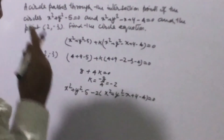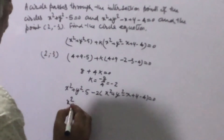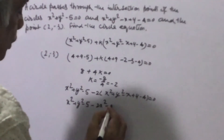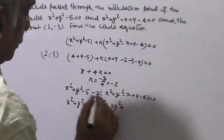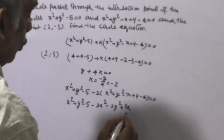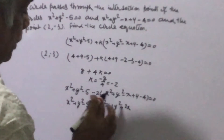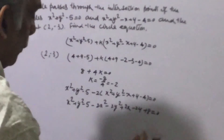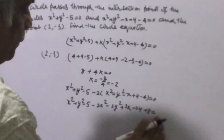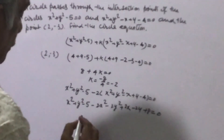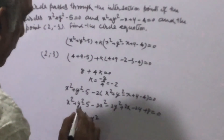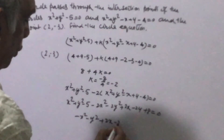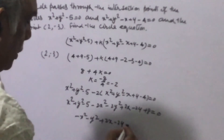Simplifying: x² + y² - 5 - 2x² - 2y² + 2x - 2y + 8 = 0, which gives us -x² - y² + 2x - 2y + 3 = 0, or equivalently x² + y² - 2x + 2y - 3 = 0. This is the required equation of the circle.